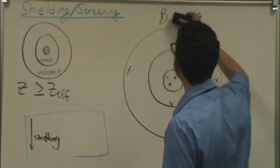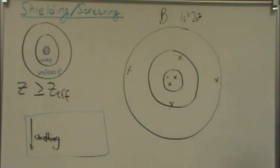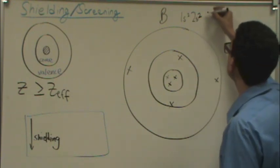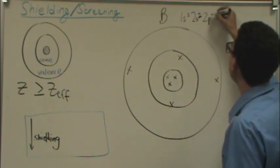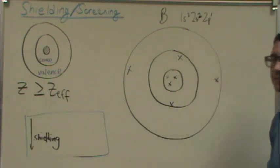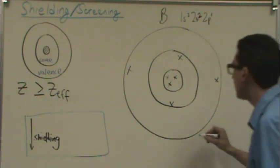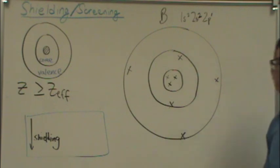And now let's go to the next one, boron. Boron is 1s2, 2s2, 2p1. So I'm adding another valence electron here.